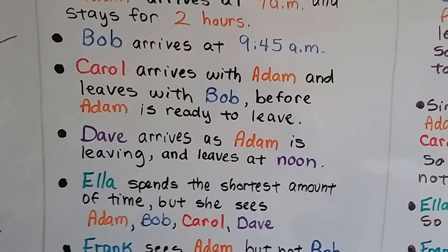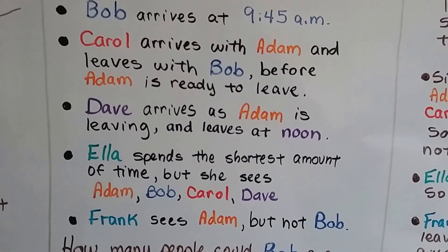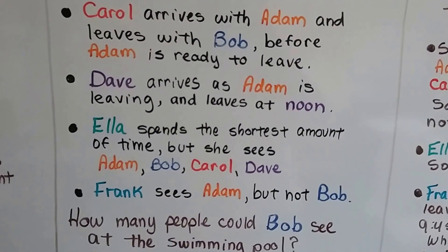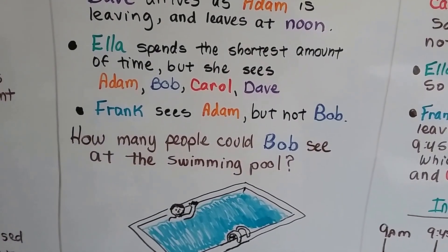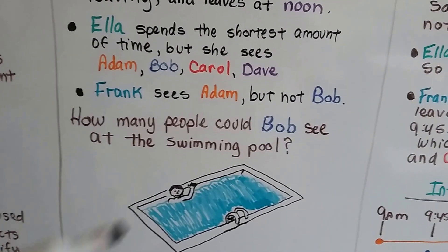Ella spends the shortest amount of time but she sees Adam, Bob, Carol, and Dave. Frank sees Adam but not Bob. How many people could Bob see at the swimming pool?